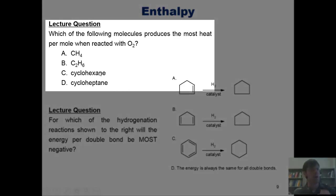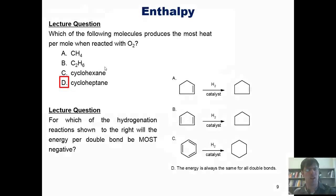In this question, we're asked which of the following molecules produces the most heat per mole when reacted with O2 in a combustion reaction. The correct answer is D. If you'd like to know why, I'll explain it right now.